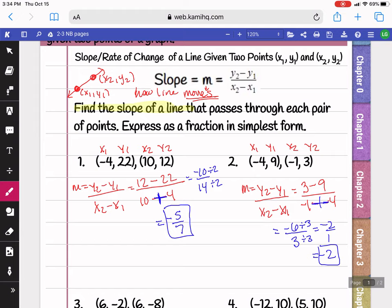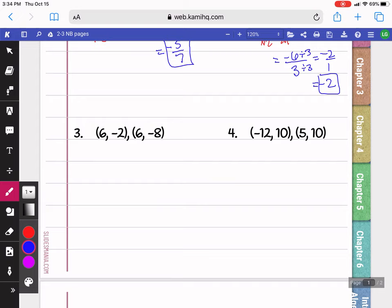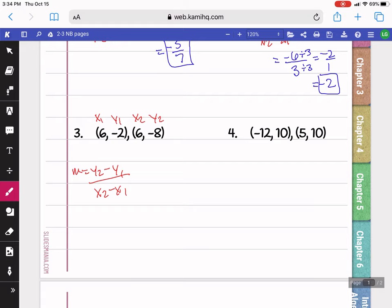My next one, I'm going to label my two points. I have my x1, y1, x2, y2. And then I'm going to write down my slope formula so I can plug in. So for y2, I have negative 8 minus y1 is negative 2. My x2 is 6 minus my x1 is 6. Here on the top, we have a double negative. So this double negative is going to change to a plus. Negative 8 plus 2 is negative 6. And 6 minus 6 is 0.